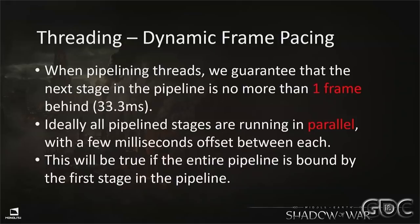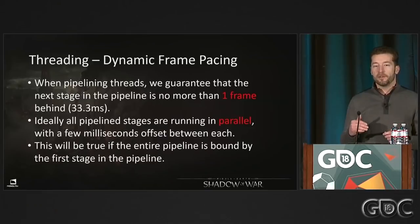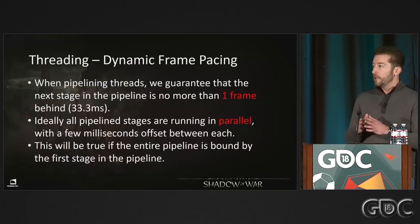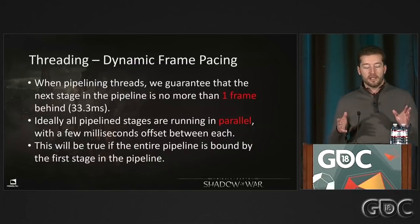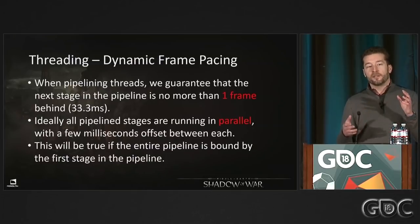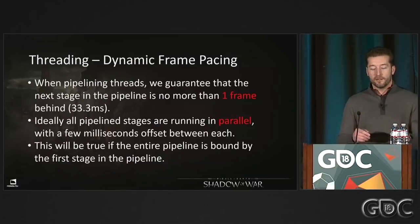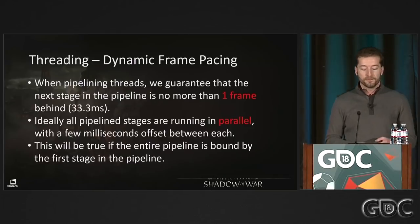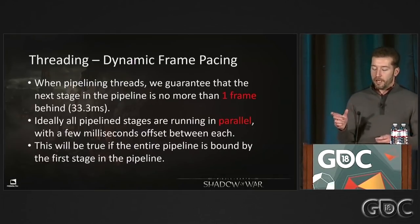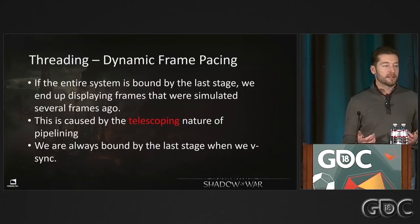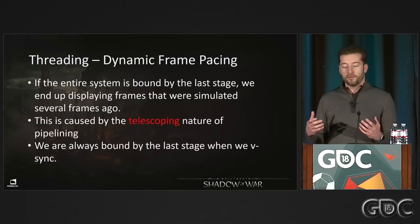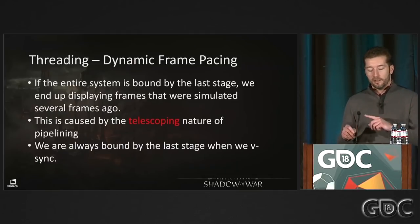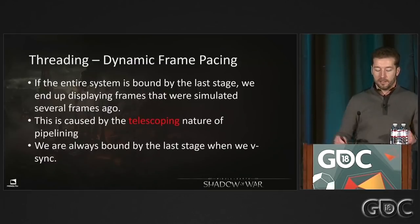When we pipeline, we ensure no stage falls more than one frame behind. If it does, we stall the stages before it. Ideally every stage executes just a couple milliseconds after the previous, so the pipeline adds maybe 10ms total latency that users can't notice. This all works as long as the first stage is your bottleneck. In retail, we're actually bound by the last stage — the VBlank, which is always exactly 33ms — so every other stage must take less than 33ms or you start dropping frames.